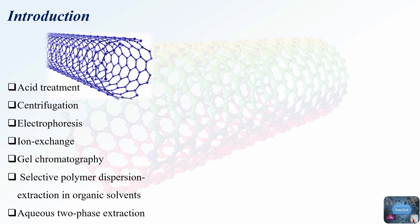These encompass ultracentrifugation — both through density gradient methods and rate zonal techniques — electrophoresis, ion exchange, gel chromatography, selective polymer dispersion extraction in organic solvents, aqueous two-phase extraction, and more. Among the recently developed techniques, aqueous two-phase extraction is notable for its capability to serve both in comprehensive purification and in the specific selection of subpopulations within SWCNTs.